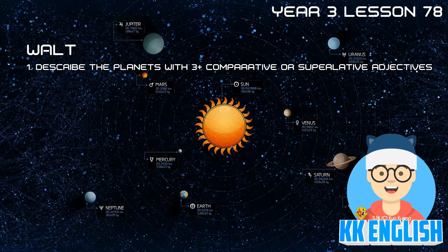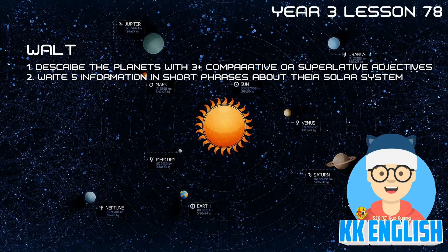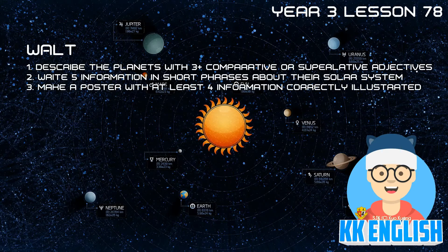We are also learning to write 5 pieces of information in short phrases about the solar system. Second of all, we are going to create a new stellar body, or a new modified solar system. And finally, at the end of this lesson, we are learning to make a poster with at least 4 pieces of information correctly illustrated. That's the last goal — we need to write your star system correctly and then create a new star.